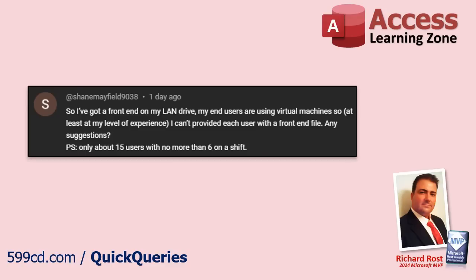Shane says he's got his front end on a LAN drive with virtual machine users and can't provide each user with their own front-end file — 15 users, no more than six simultaneous. If people are simultaneously using your database, they really should each have their own copy of the front-end file on their local drive. With virtual machines, each session should have its own copy. If not, you'll run into problems — Access doesn't like two people working from the same front-end file at once. It will invariably corrupt. Back up nightly.